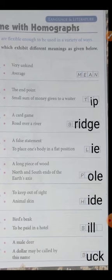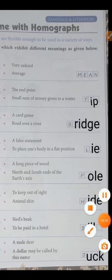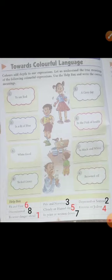So, first page — you have to complete it like this. Then come to the second page. Bachche, second page is 'towards colorful language.' It means ki kuch colors hamein kuch denote karte hai, specifically. Toh woh humare expressions ko bhi depth dete hai. We understand karte hai ki kya matlab hota hai in colorful expressions. Help box mein maine yeh sara likh diya hai — answers. In ko samajhenge aap pehle achhi tarah se. Aap book mein complete karke likh sakte hai, help box se.